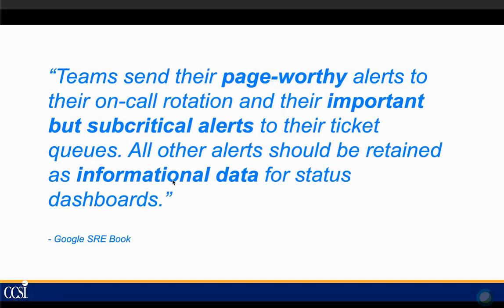Also from the Google SRE book — Site Reliability Engineering — teams send their pager-worthy alerts to their on-call rotation. Those should be your super-critical, hair-on-fire alerts. Subcritical alerts go to ticket queues. Everything else just gets retained as informational data and shows up as status on dashboards.